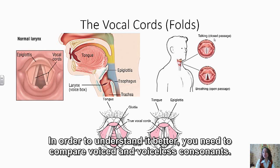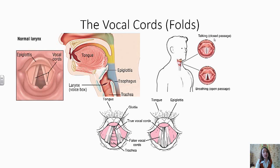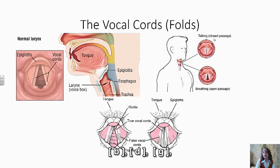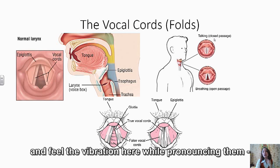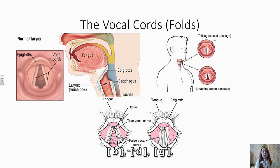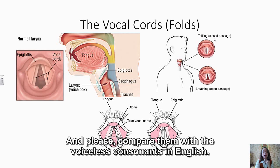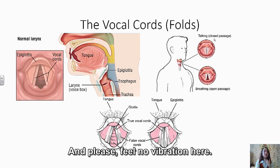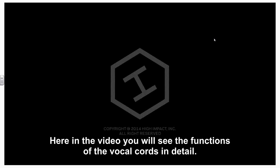In order to understand this better, compare voiced and voiceless consonants. Take, for example, the voiced consonants in English: B, D, G — and feel the vibration while pronouncing them. Now compare them with the voiceless consonants in English, such as P, T, K — and feel no vibration. Here in the video, you will see the functions of the vocal cords in detail.